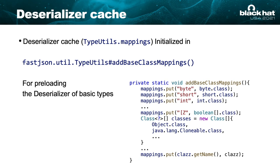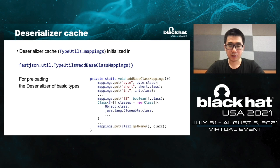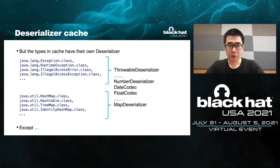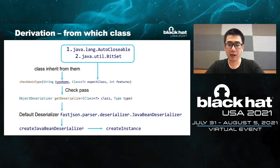We focus on the deserializer cache, named 'typeUtilsMappings'. It's initialized in typeUtils at base class mappings for preloading deserializers of basic types. You can see that classes like byte, int, boolean array, Object, and the interface Cloneable are added to the cache mappings. Although there are many low-level classes and interfaces in the cache, most have their own specified deserializer. For example, class Exception and class Error are handled by ThrowableDeserializer; HashMap and Hashtable are handled by MapDeserializer. But there are two types — java.util.BitSet and java.lang.AutoCloseable — for which FastJSON will create a default Java bean deserializer.